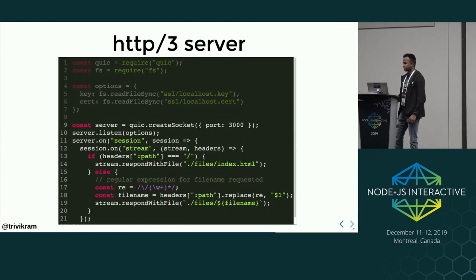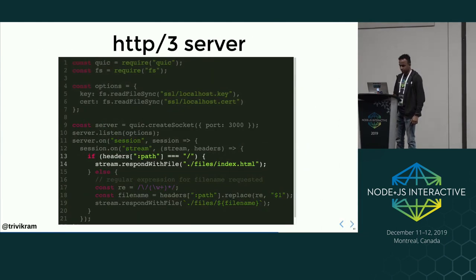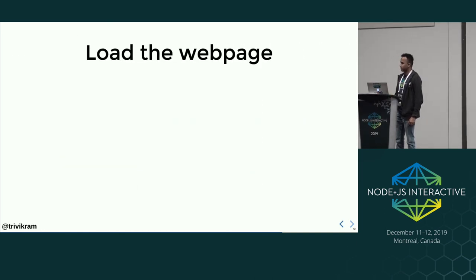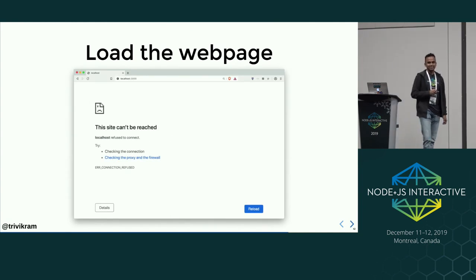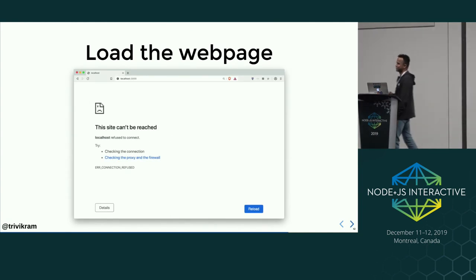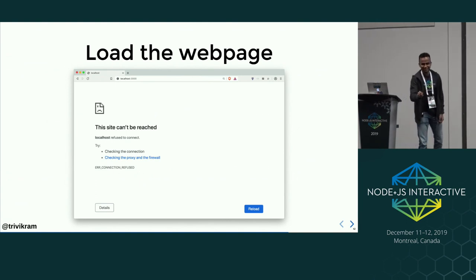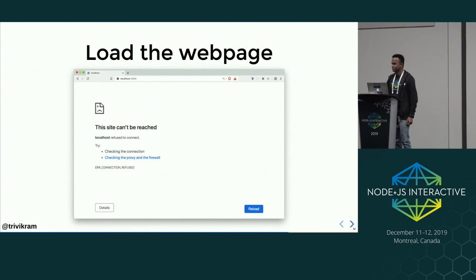Let's see the HTTP/3 server. When you request slash you get index.html, otherwise you request the file name. When you load the web page, you get 'this site can't be reached' — why? Because it is experimental. You cannot use it in production, but we have done a lot of progress.